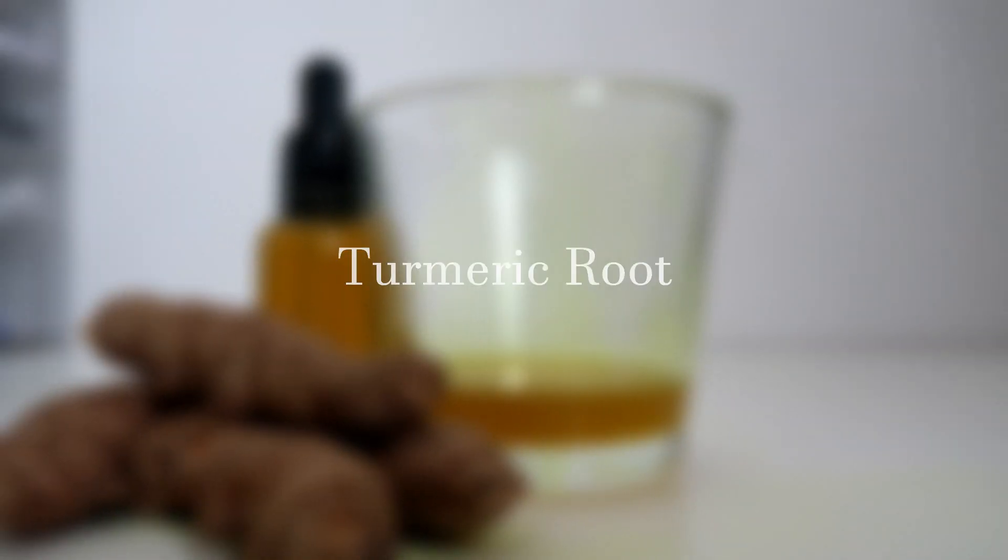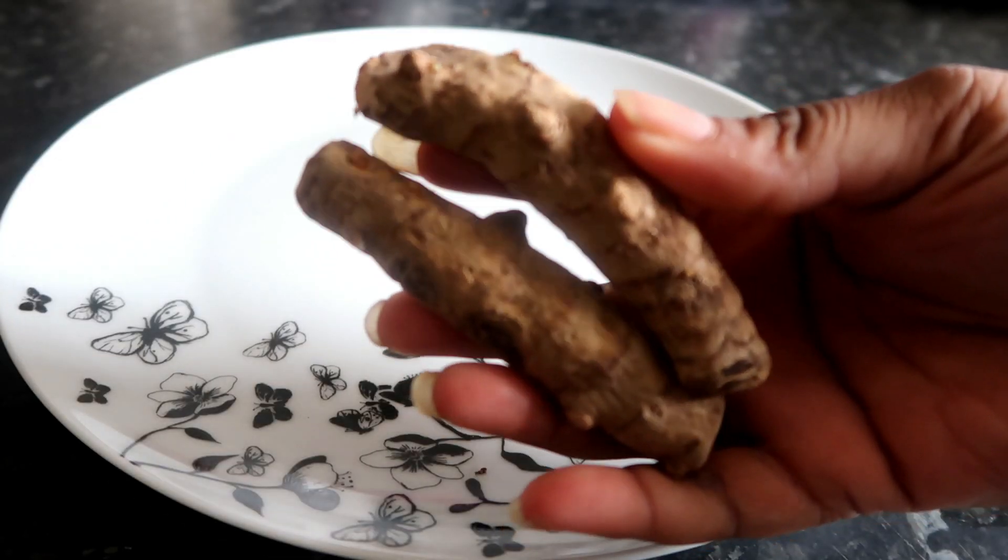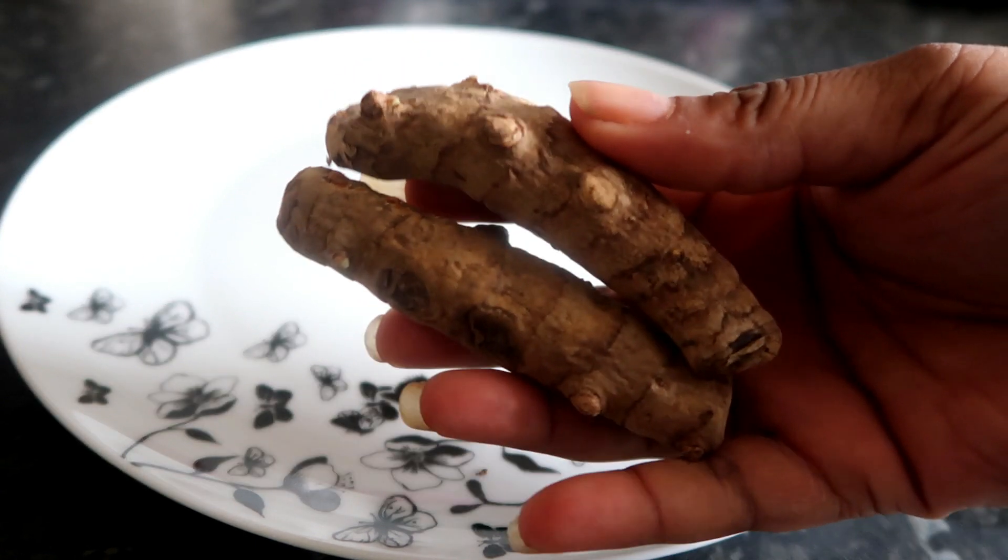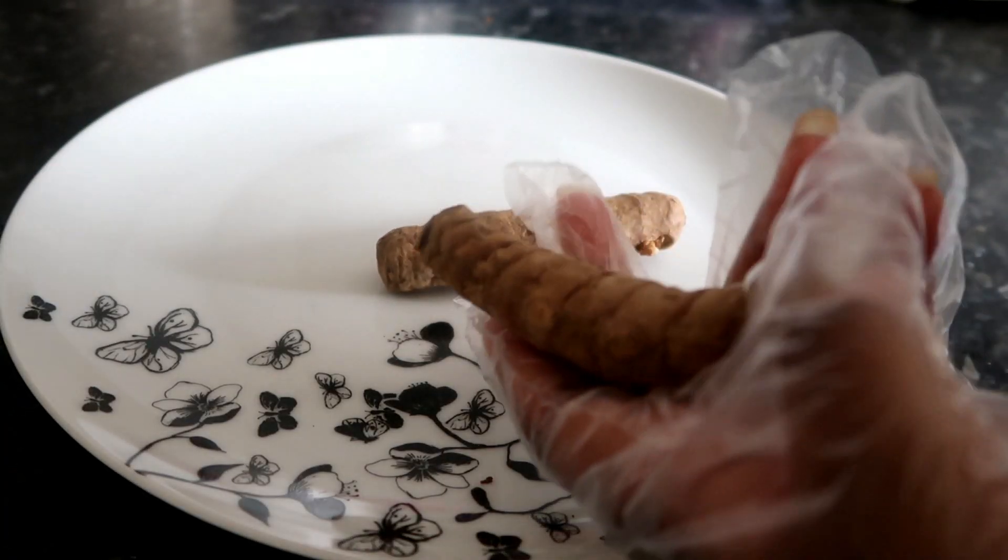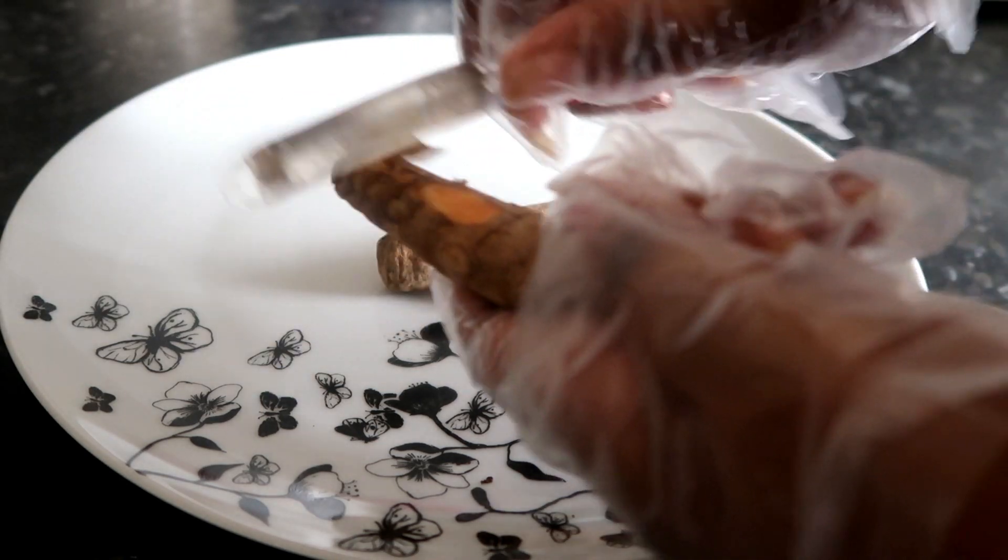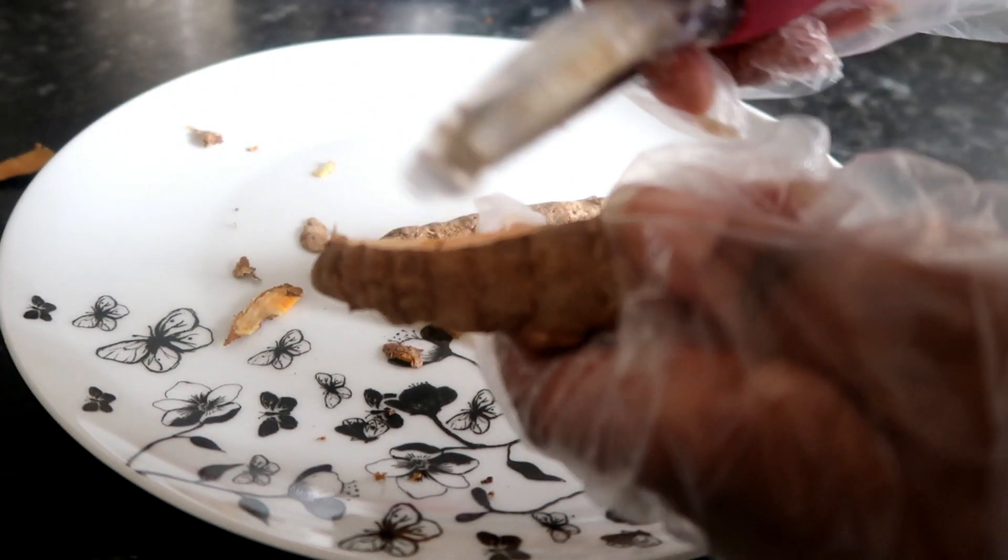Now I want to show you how I make turmeric oil using natural turmeric root. So this is also very easy just like doing it with powder. So I have two turmeric roots here but I did use more in the end. I normally use about five. So at first I start off with a potato peeler to peel off all the skin.